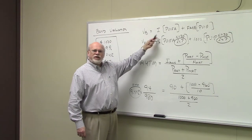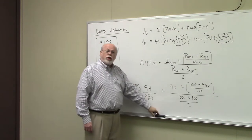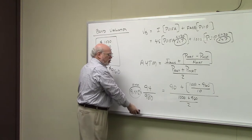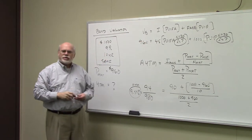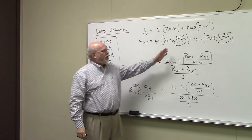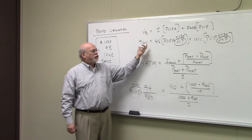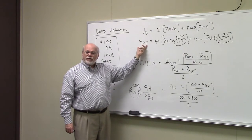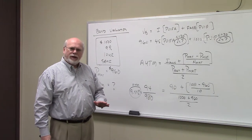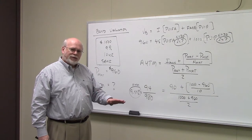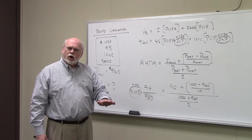Up here you see the bond pricing formula that we talked about when we were doing bond valuations. In this case, we know the value of the bond in the market — we're not looking for that anymore. We know that the price of the bond in the market is $960. The internal rate of return is that interest rate that sets the present value of the inflows equal to the present value of the outflows — what we would pay for the bond. So our question is: if we pay $960 for this bond and get $45 every six months for ten years, and then $1,000 ten years from now, what rate of return would we earn?